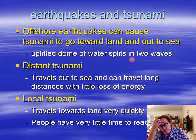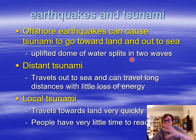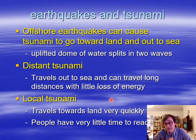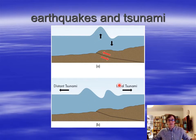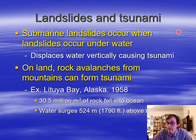To summarise: earthquakes and tsunamis — offshore earthquakes can cause tsunamis to go both landwards and out to sea from this uplifted dome, then it collapses and splits into these two waves. We can call it the distant tsunami — the wave that travels out into the deep ocean basin and affects countries on the far side — they travel out to sea and can travel long distances with little loss of energy. And the local tsunami: these travel towards land very quickly, therefore people have very little time to react — minutes rather than hours.